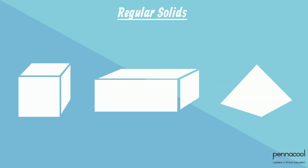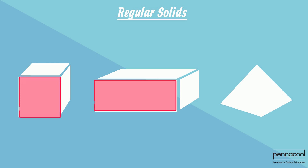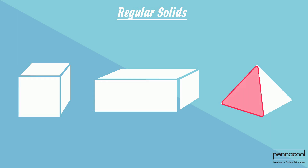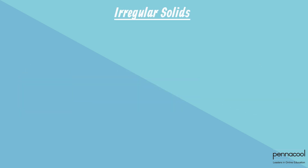Regular solids are made up of definite shapes. Shapes such as squares, rectangles, and triangles can be identified within its structure. Irregular solids, however, have inconsistent structures.